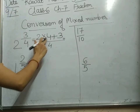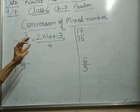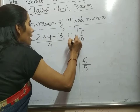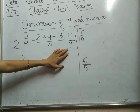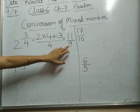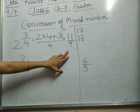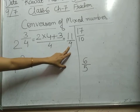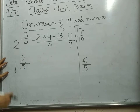So, what you will get? Two fours are eight, plus three is eleven. So, you got eleven by four. It is converted into an improper fraction. It is improper because fractions which are greater than one are improper fractions. If you divide eleven by four, you will get a number which is greater than one.